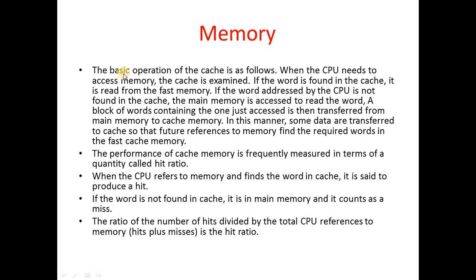The basic cache operation: when the CPU reads from memory, the cache is examined first. If the word is found in cache, it is read from fast memory. If the word addressed by the CPU is not found in cache, the main memory is accessed to read the word.